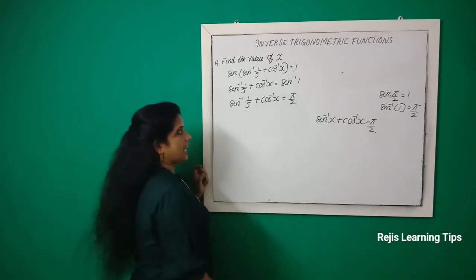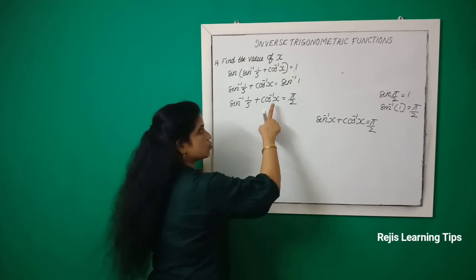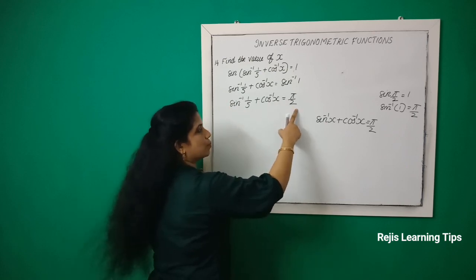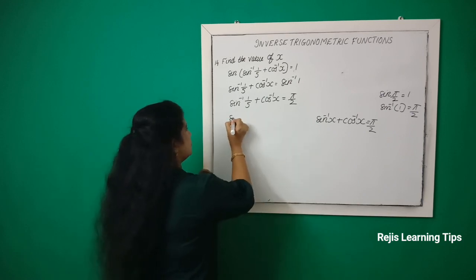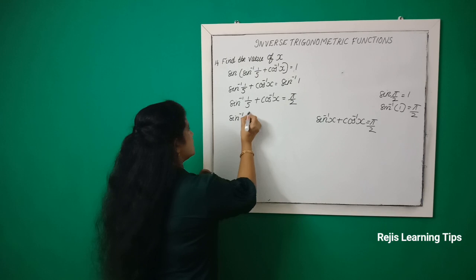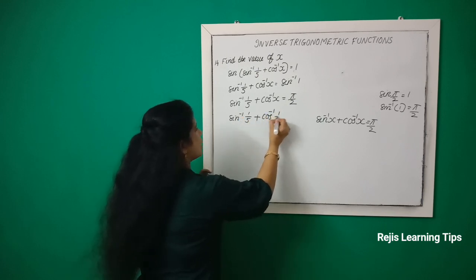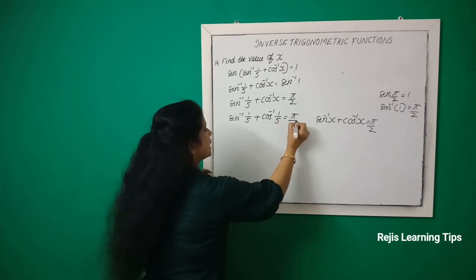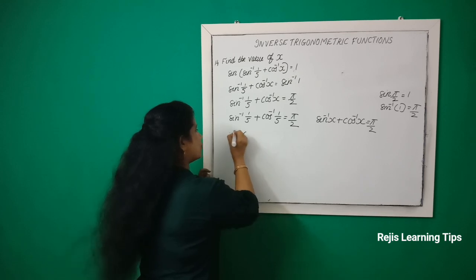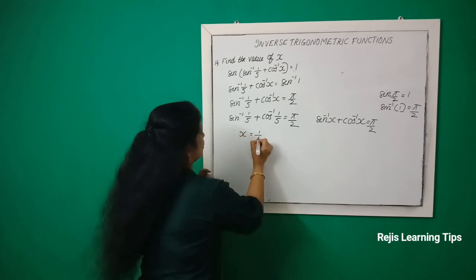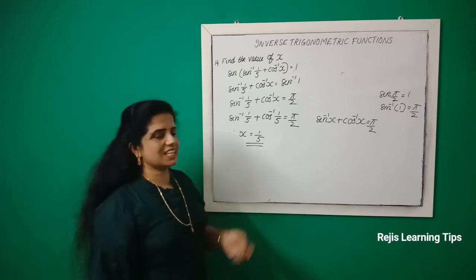We know that sin⁻¹(1/5) + cos⁻¹(1/5) = π/2, using the identity sin⁻¹a + cos⁻¹a = π/2. Comparing, we get x = 1/5.